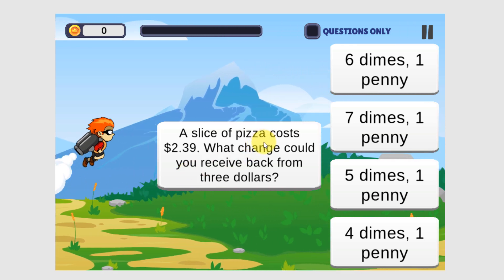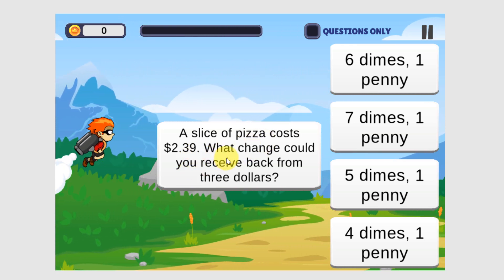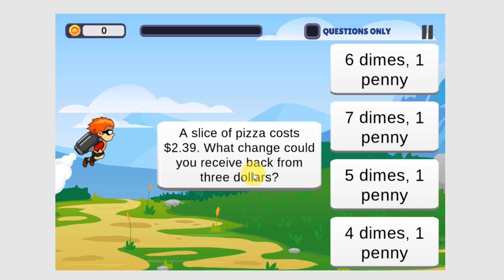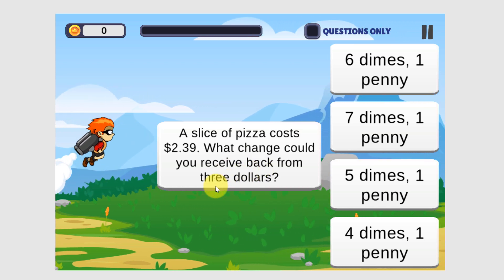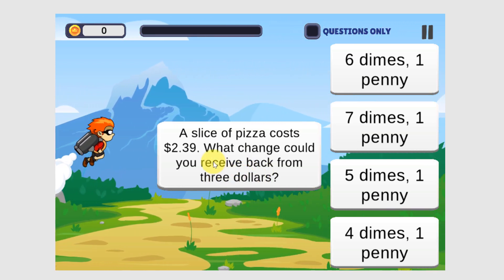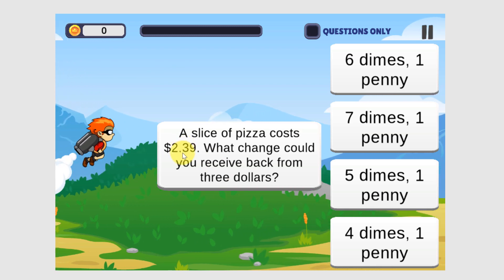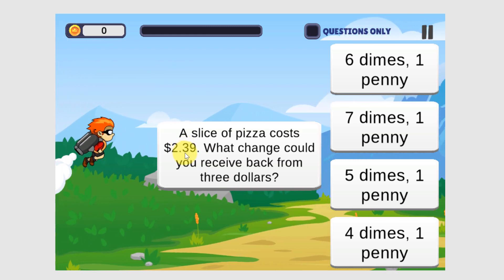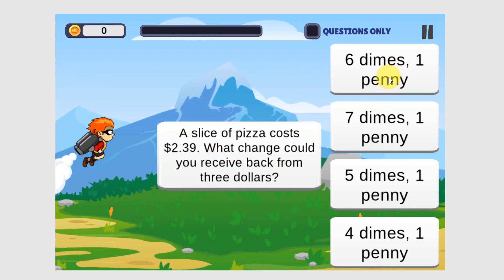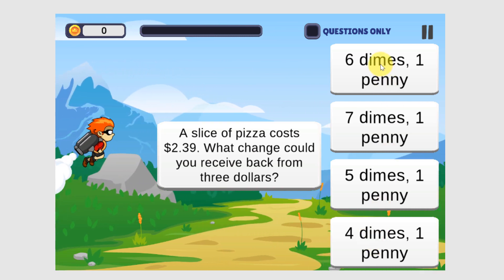A slice of pizza costs $2.39. What change could you receive back from $3? So if we subtract $2.39 from $3, we get $0.61. So which one of these adds up to $0.61?